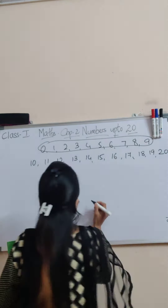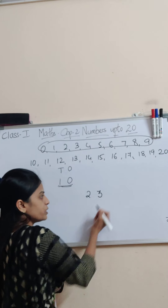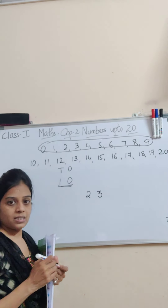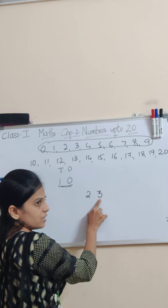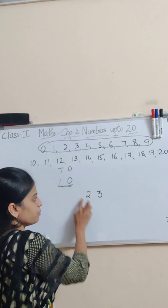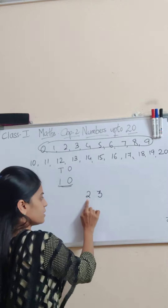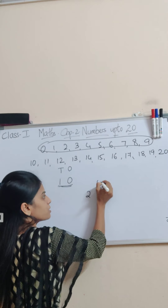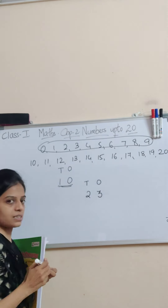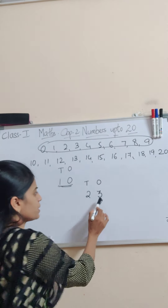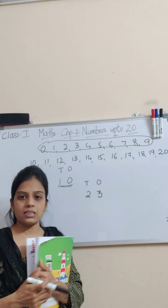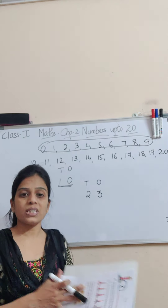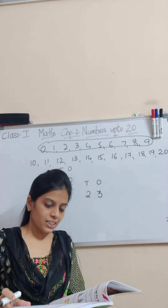Suppose I write the number 23. This number is regrouped into two parts: the right digit 3 is in the 1's place, and the left digit 2 is in the 10's place. So today we are going to learn about regrouping — the 1's and the 10's.